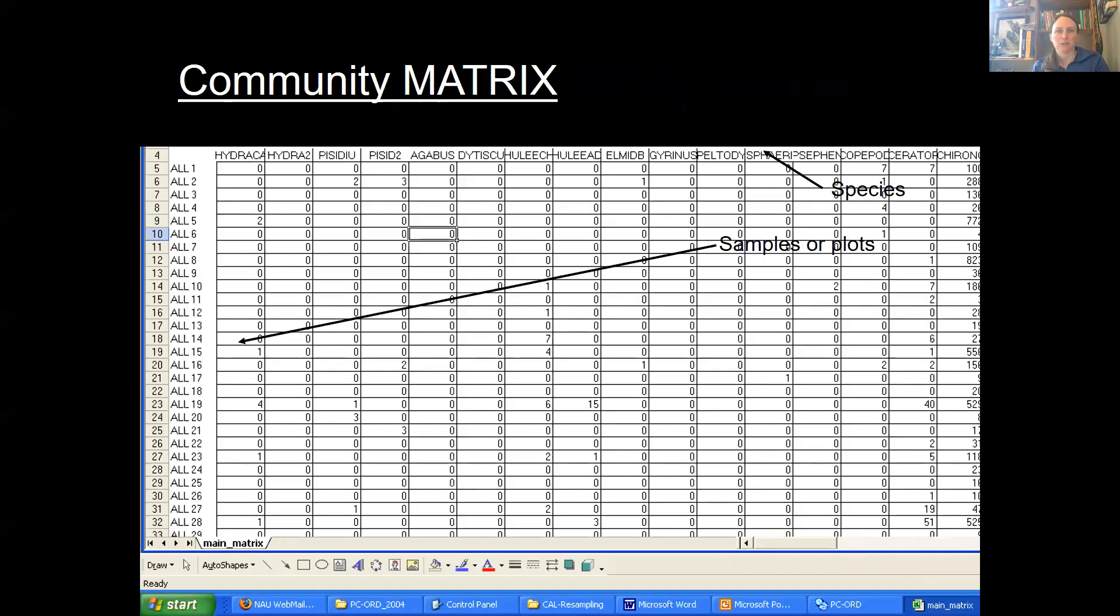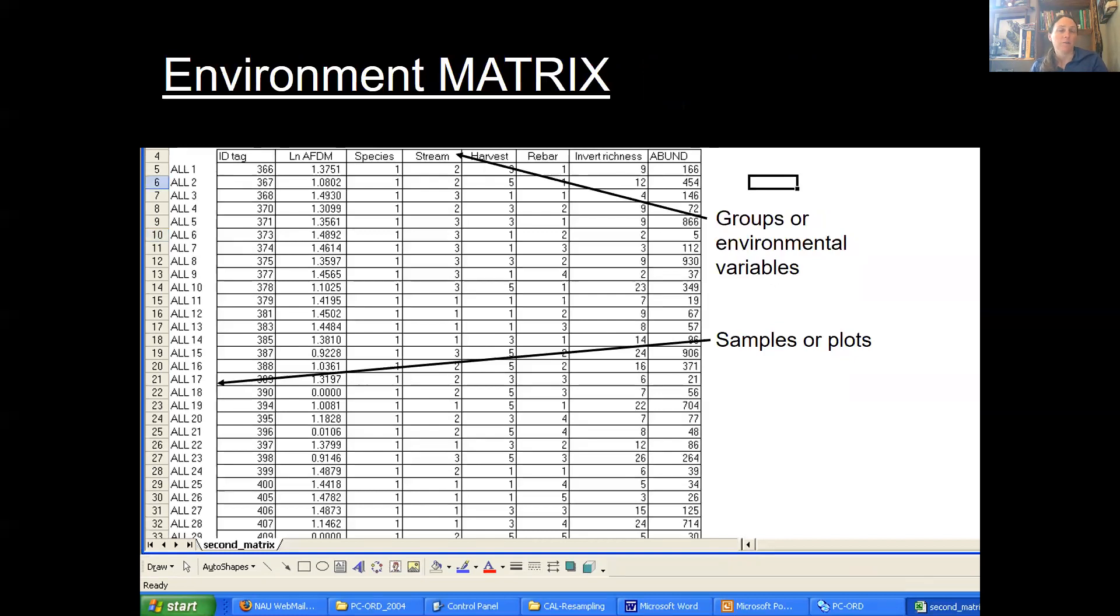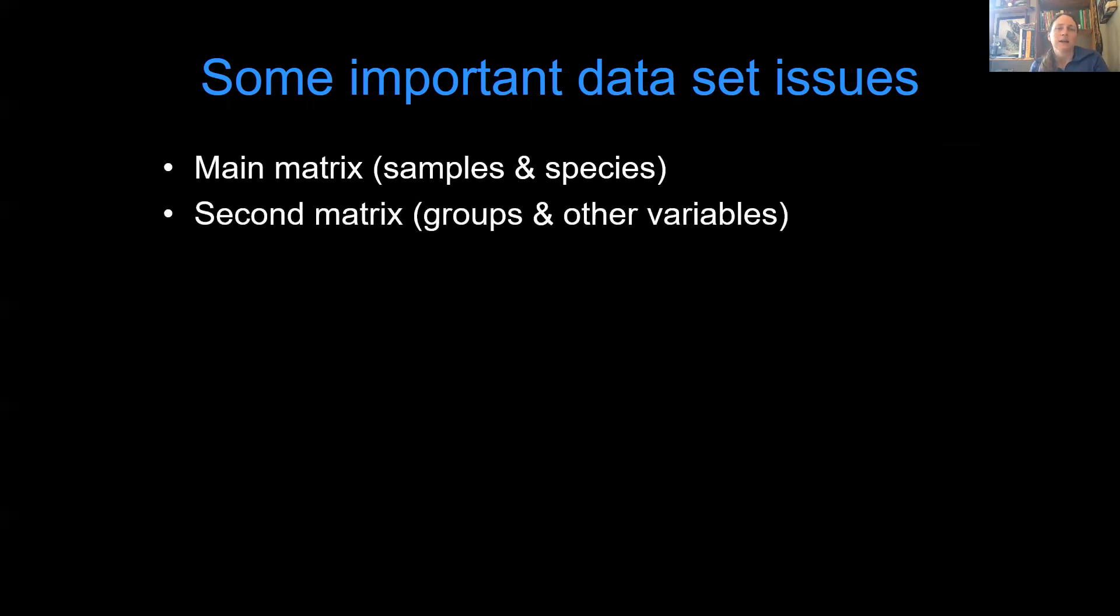So let's get back to this community data set. You have either a community matrix with species in your columns, or you have an environmental matrix where you have these other factors, things that you measured about your plots. And those would also go in columns in your data set. Some important things about data set issues. One, you have to have the two different matrices. Actually, in R, we're going to combine them. No, no, sorry. In R, we're not going to combine them. In PAST, we're going to combine them. But in R, they need to be separate. Some programs want them separate. Some want them together. So you really just need to know what kind of program you're working with.